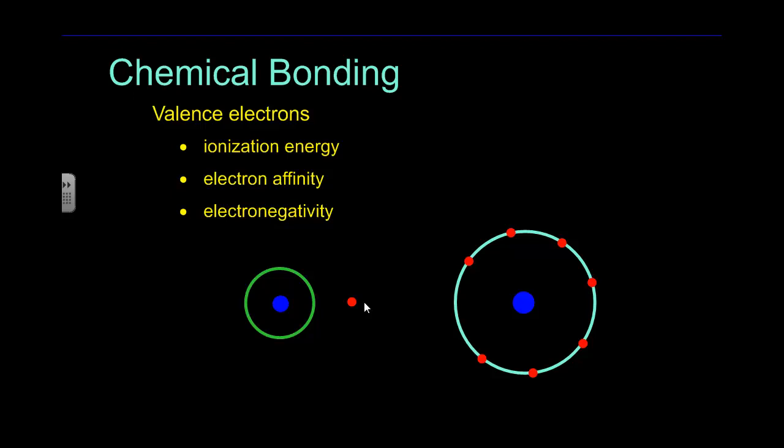Electron affinity, on the other hand, is the quantity of energy that is changed when an electron is actually received by an atom. So it's attraction for those electrons when we think about affinity—how attracted we are to those or how much energy we're going to give off because we're excited to get that electron.